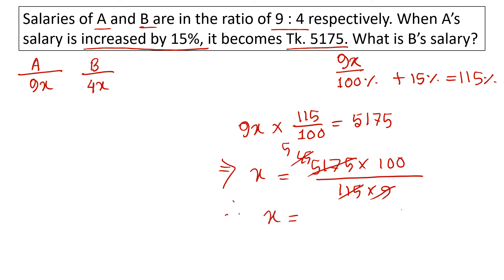x equals 500. B's salary is 4x, so 4 into 500 equals 2,000. Therefore, B's salary is 2,000.